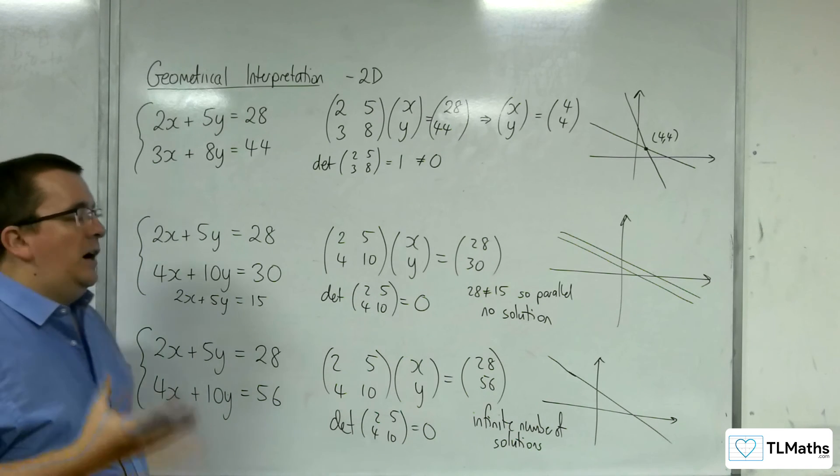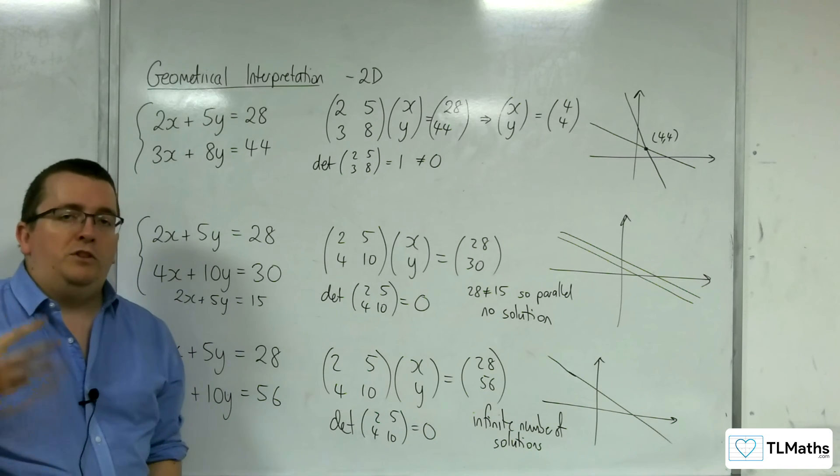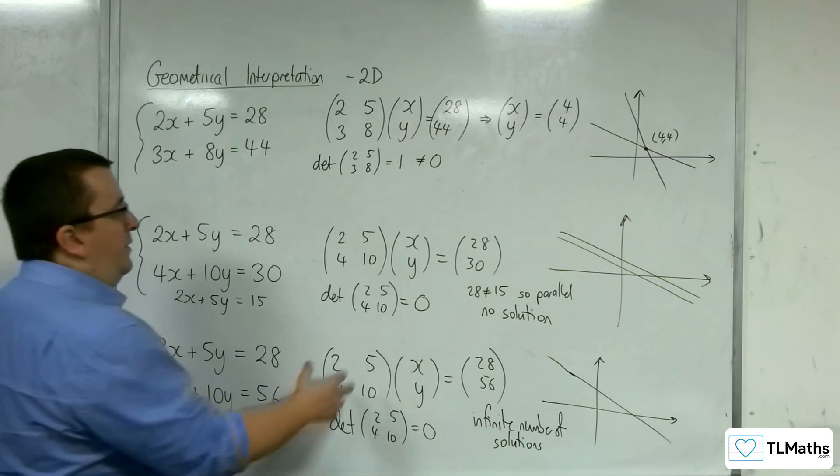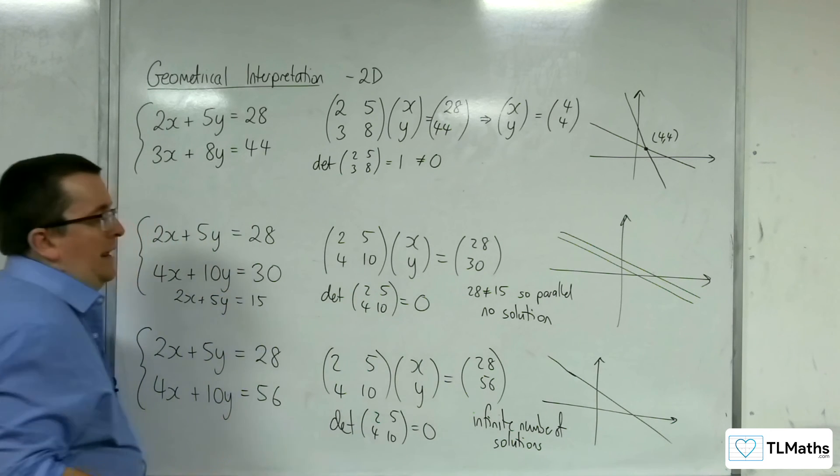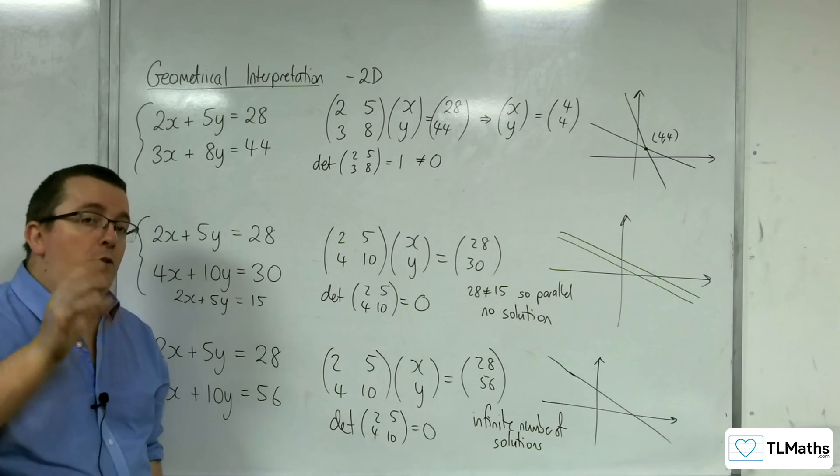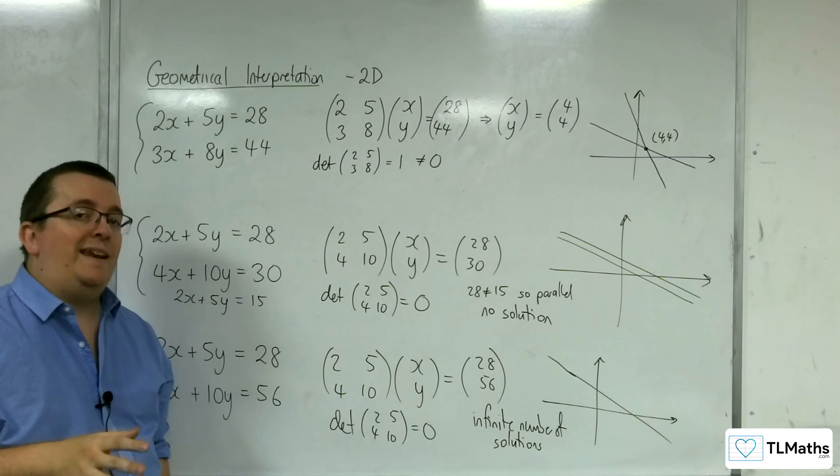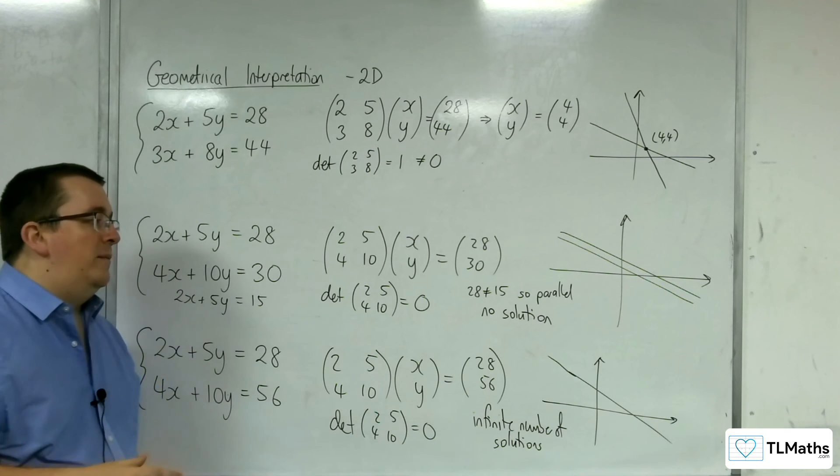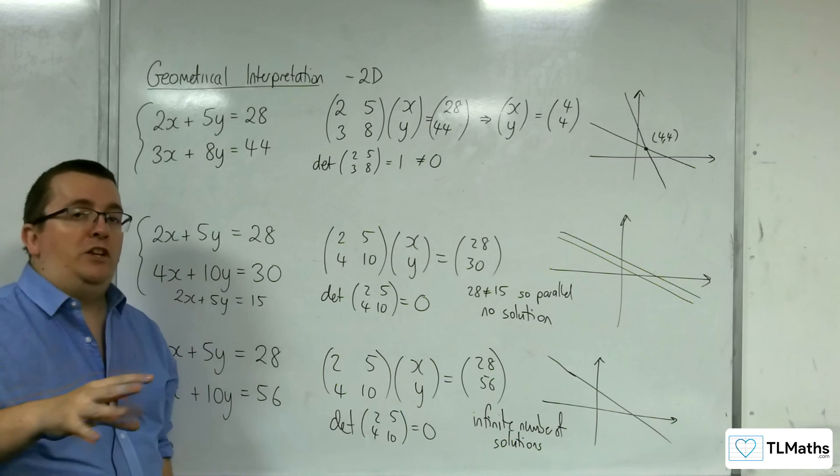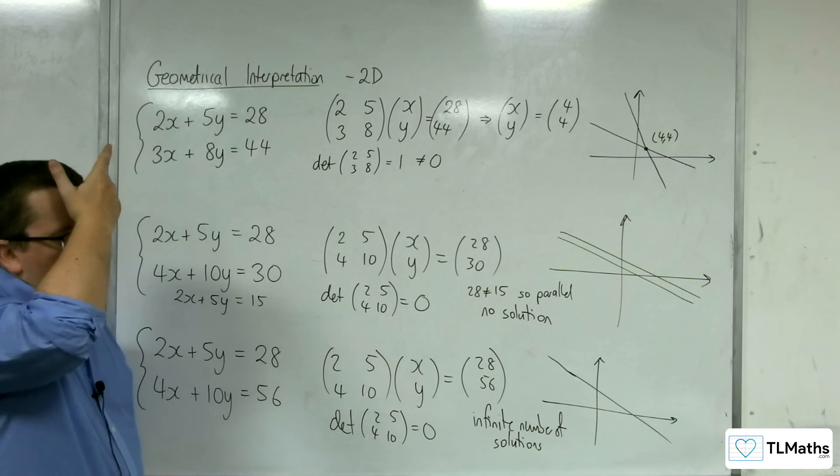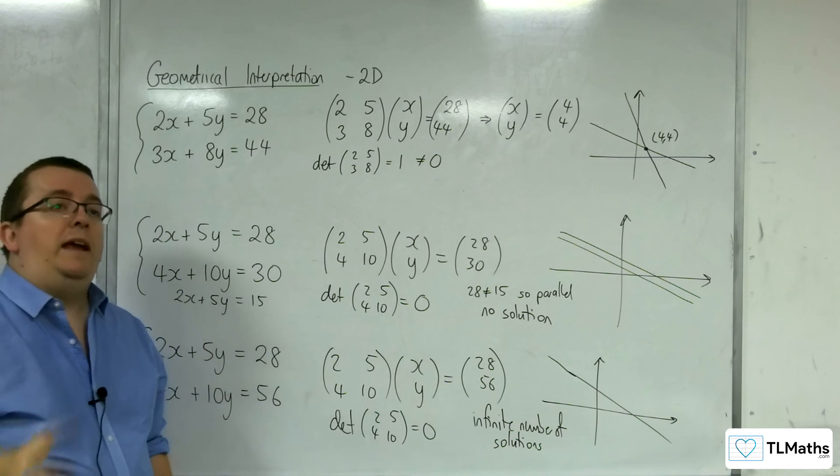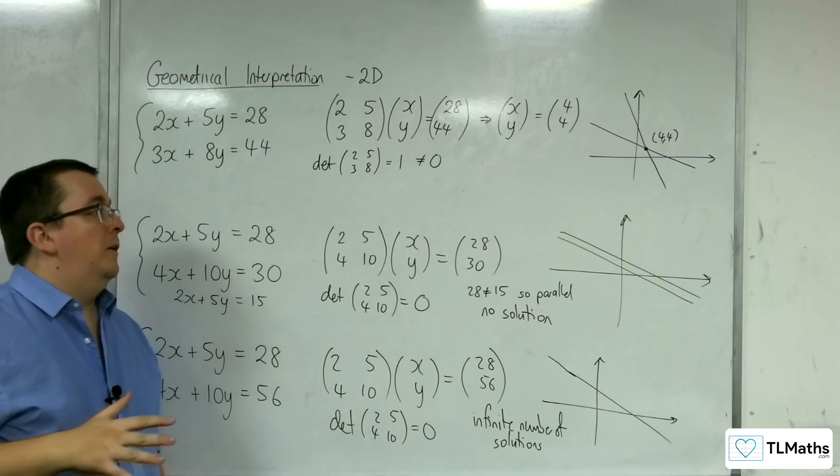Now, when we extend this up into 3D, which is what we're going to be going on to in the next few videos, this problem with the determinant being 0 is the key identifier. But there are a few more situations that we can have in three dimensions that we need to be able to deal with and figure out which situation we are dealing with. Okay. So we're going to be moving on to, rather than lines, planes in a 3D space.